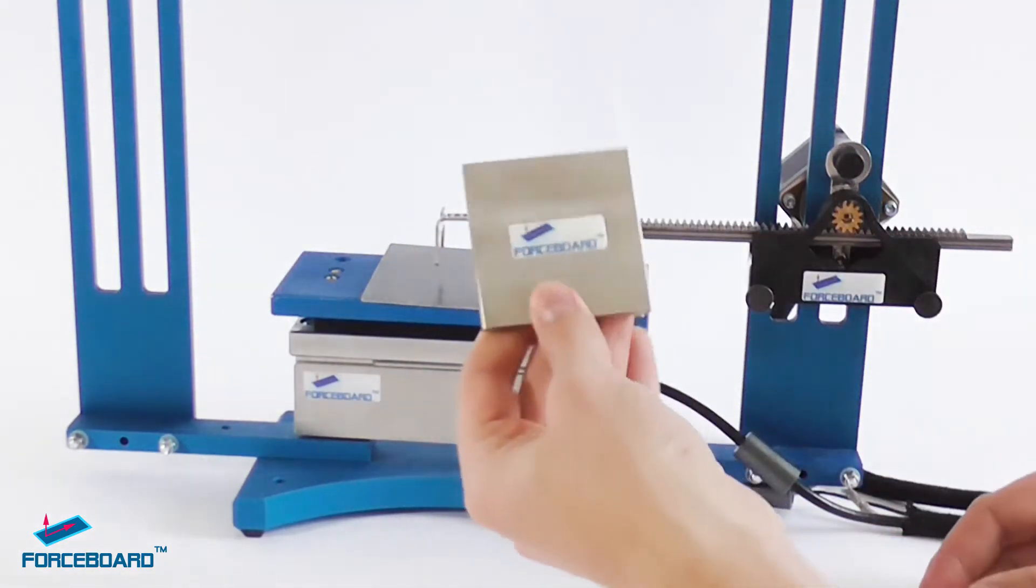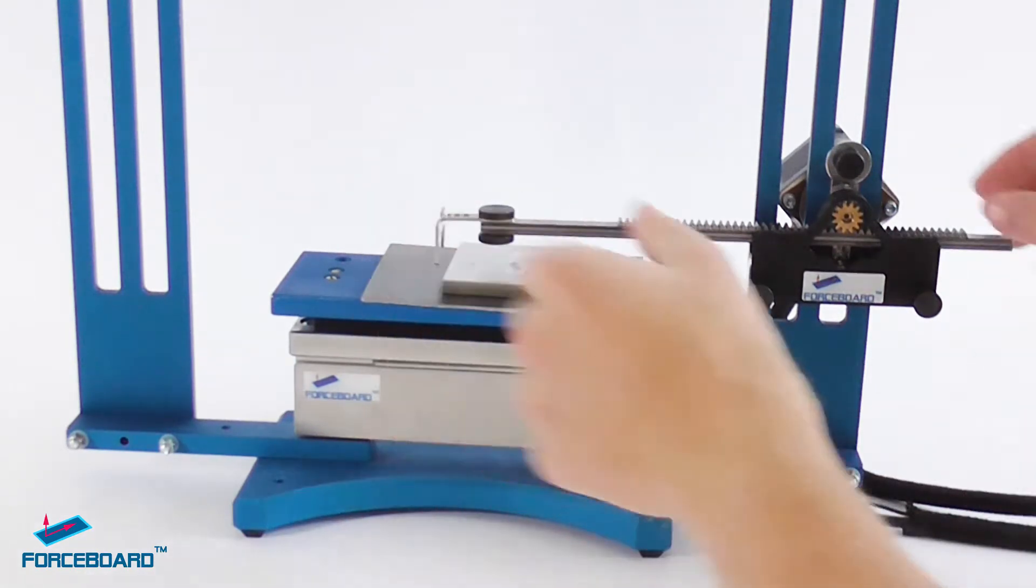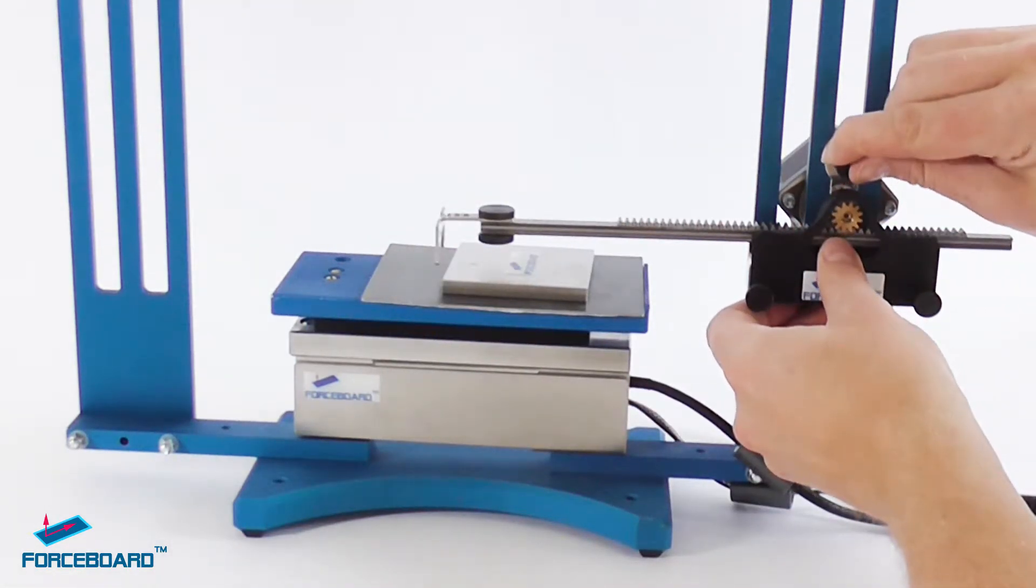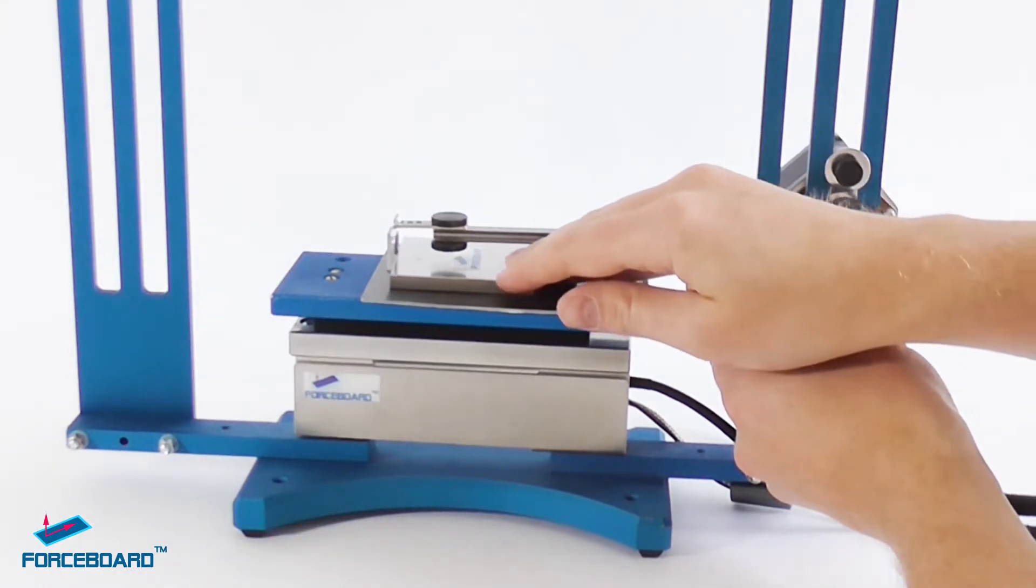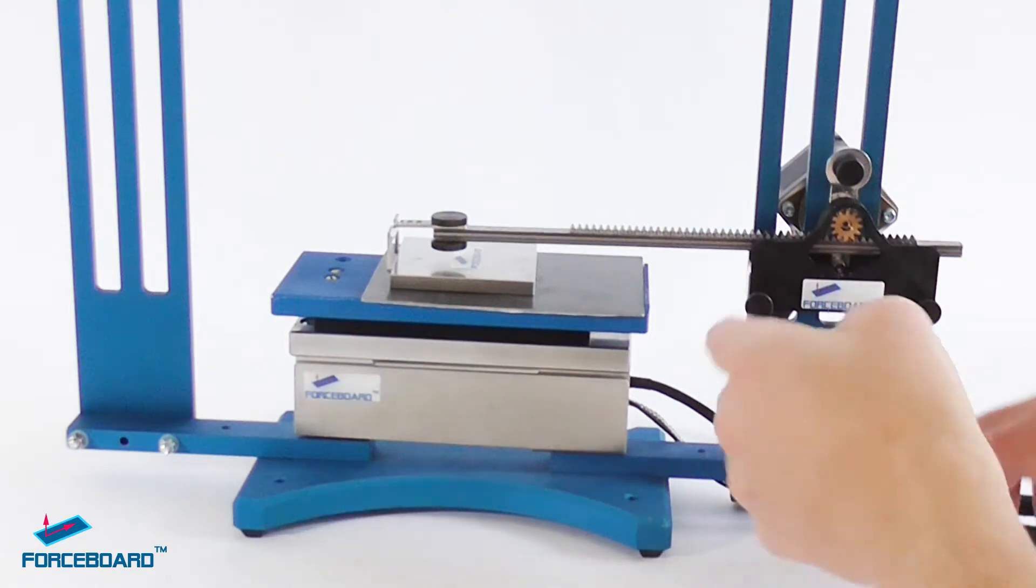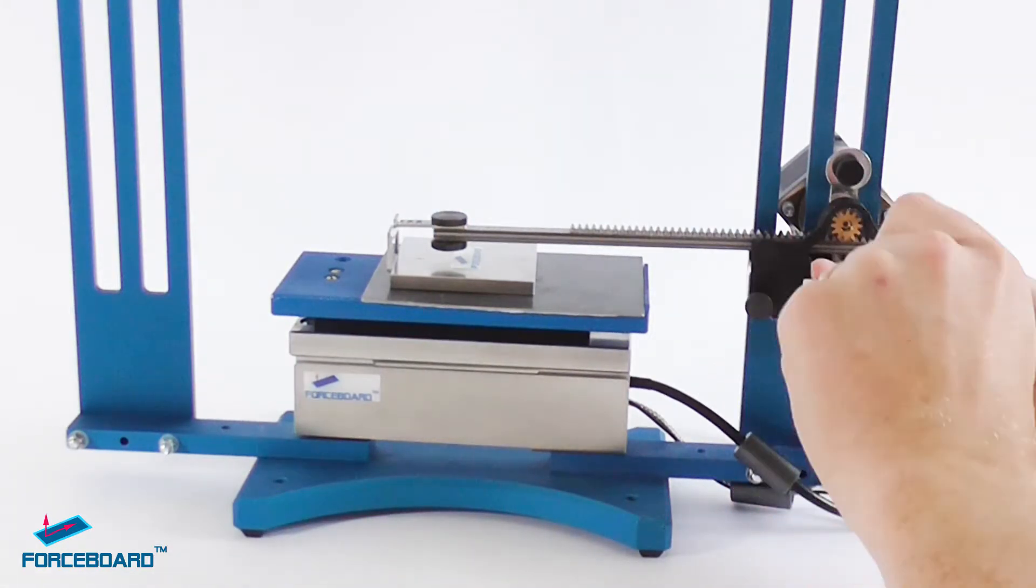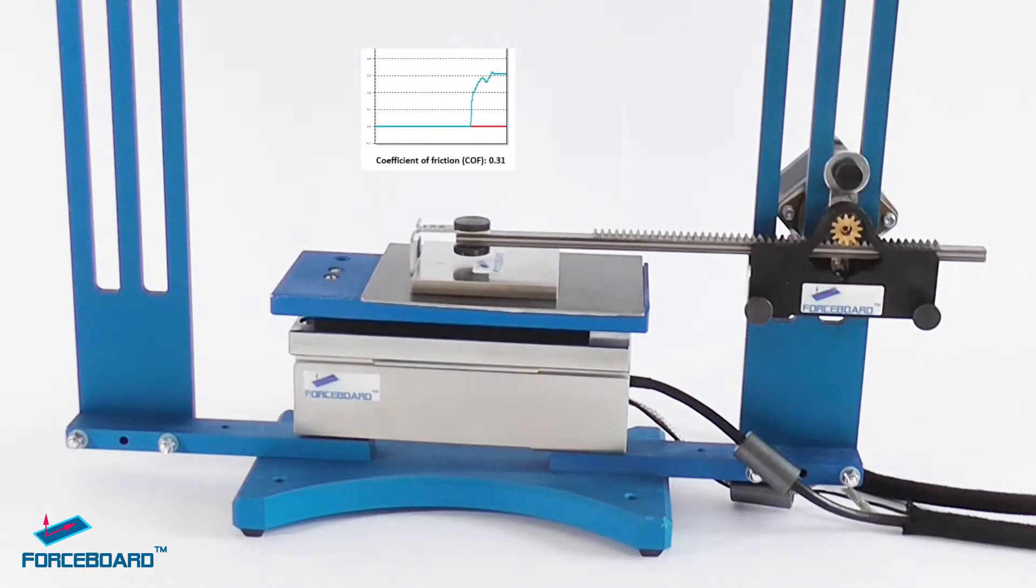We bring the metal plate into the correct position and tighten the screws to the assembly, and then we measure the coefficient of friction. That's it.